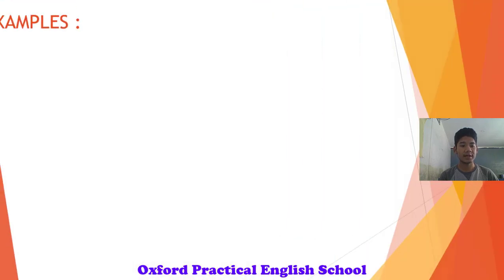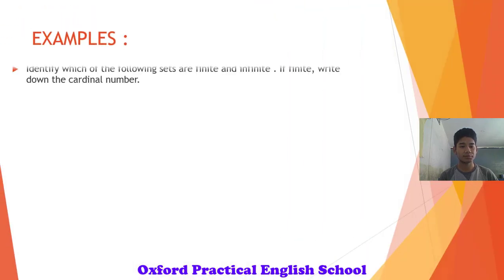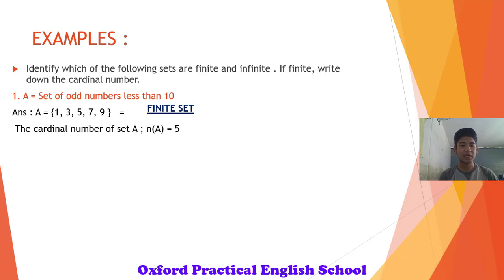Let's have a look at the examples. Identify which of these following sets are finite and infinite. If finite, write down the cardinal number. Number 1, set of odd numbers less than 10. They are 1, 3, 5, 7, 9. Can we count them all? Yes. And hence it is a finite set. Now can we write down its cardinal number? Yes, we can. Since it is a finite set, the cardinal number of set A is 5.